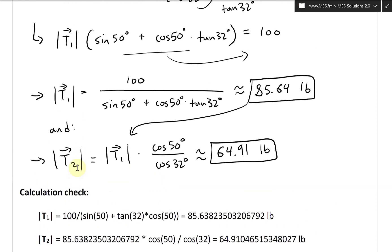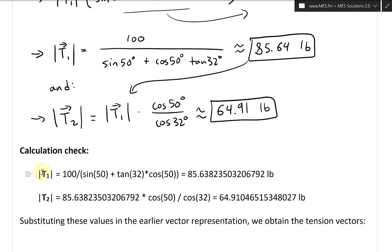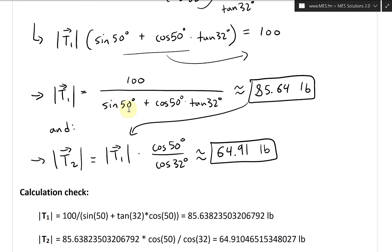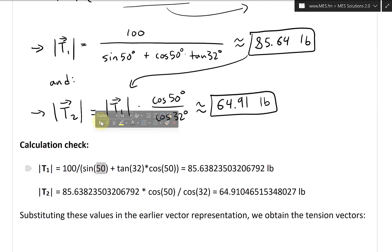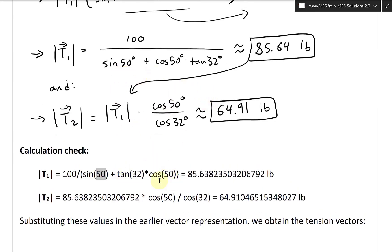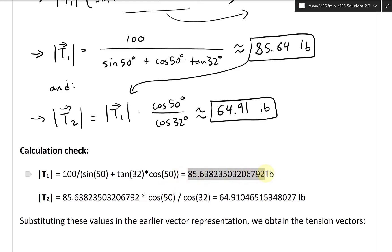Quick calculation check: T1 = 100 / (sin50° + cos50° × tan32°). Using a OneNote built-in calculator with default degrees mode, this gives 85.638, which rounds to 85.64. Check mark — that's correct.